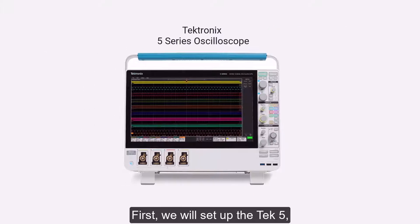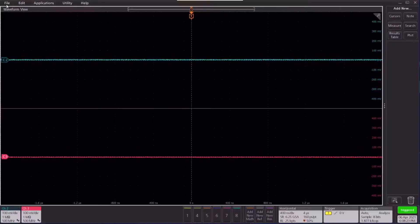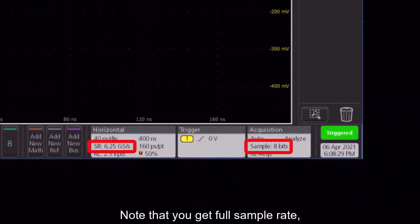First, we will set up the Tekt5, which is advertised as having a 12-bit ADC. We press default setup. Note that you get full sample rate but only 8 bits of vertical resolution.